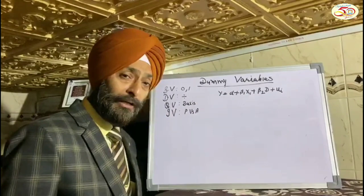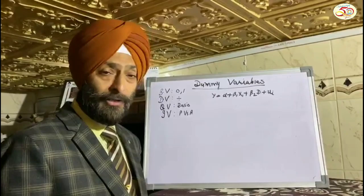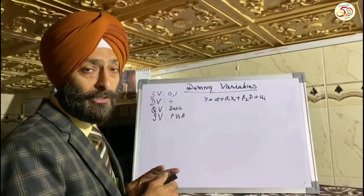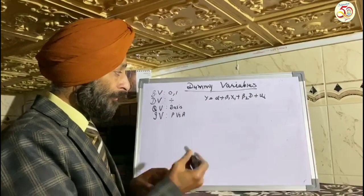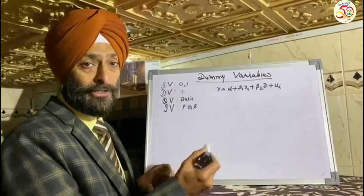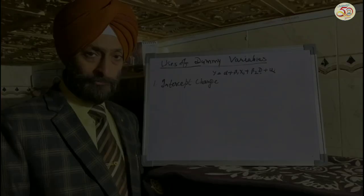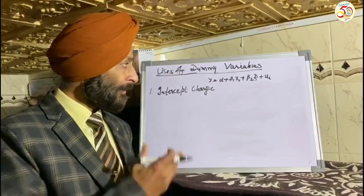Now, dummy variable has different uses, which we are going to explain with the help of this model: Y = α + β₁X₁ + β₂D + uᵢ, where D indicates the dummy variable. Y is the dependent variable, alpha is the intercept, X₁ is the independent variable with slope coefficient β₁, and the dummy variable coefficient is β₂.